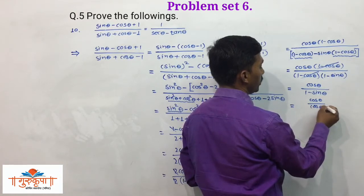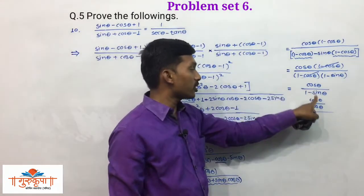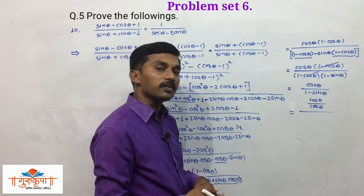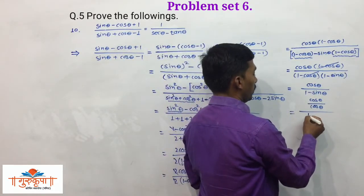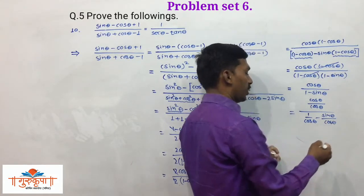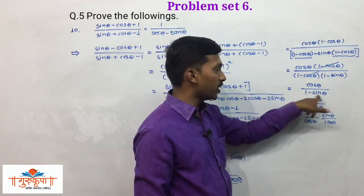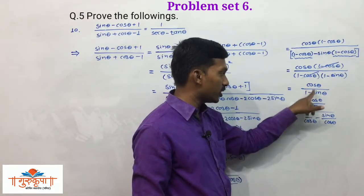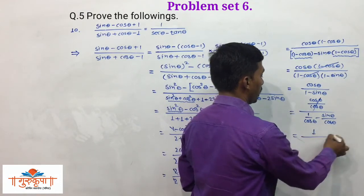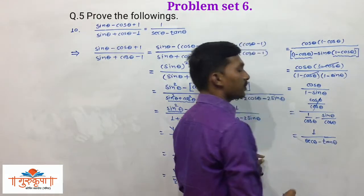This is a very important adjustment. We divide both numerator and denominator by cosθ. The numerator becomes 1. The denominator (1 - sinθ) divided by cosθ separates as: 1/cosθ - sinθ/cosθ, which is secθ - tanθ. So cosθ/cosθ = 1 divided by (secθ - tanθ), which is the RHS.